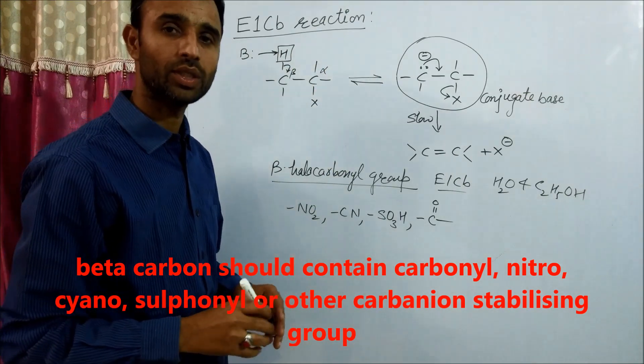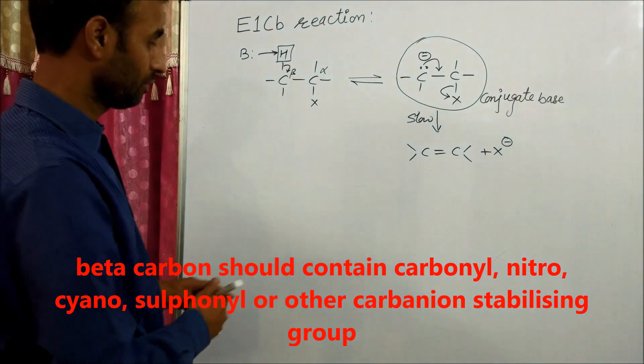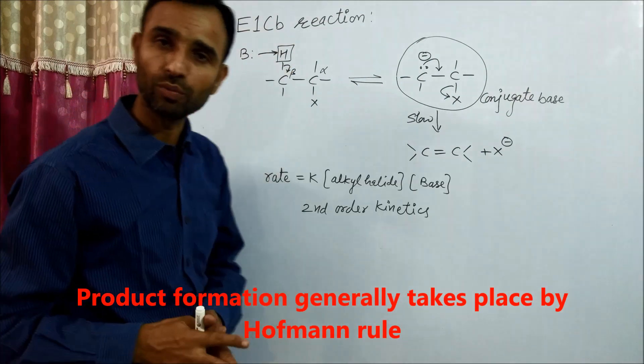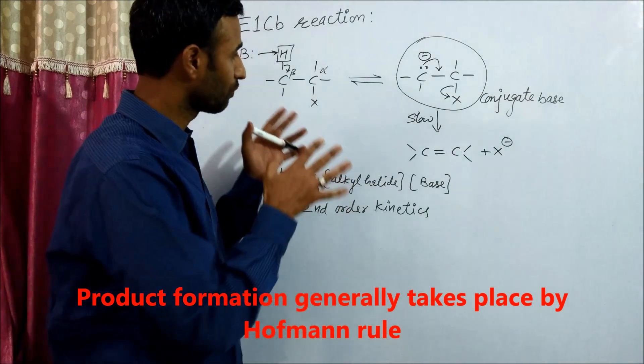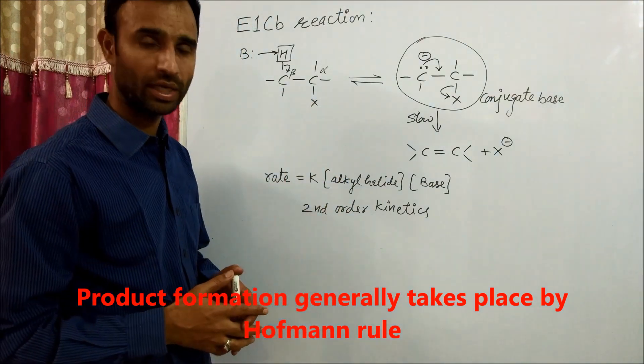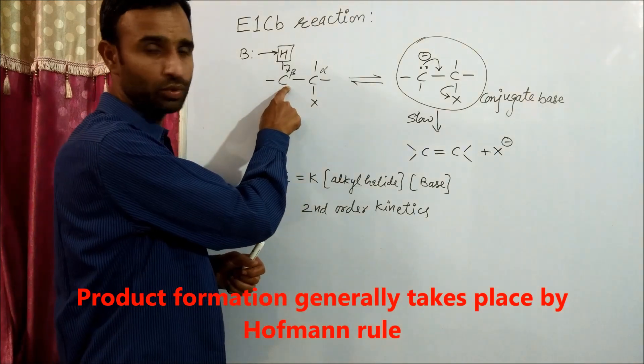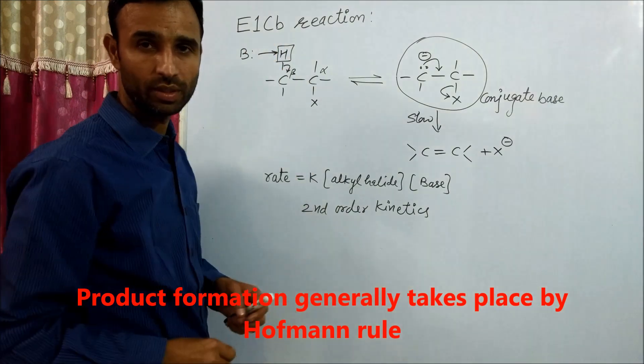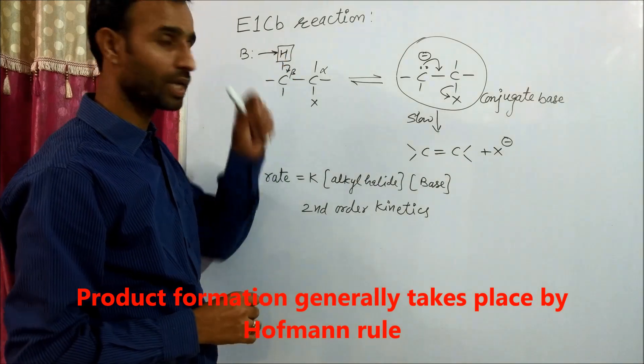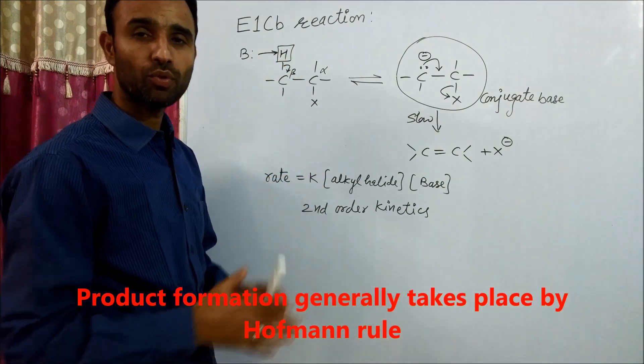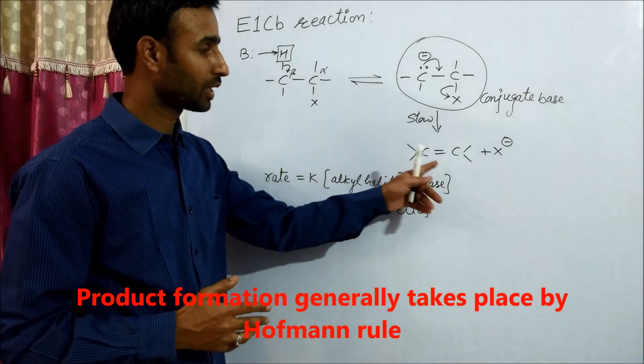From where do we remove hydrogen? From the carbon which is attached to electron withdrawing groups, because that hydrogen becomes more acidic.